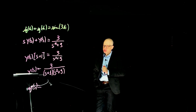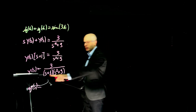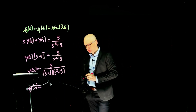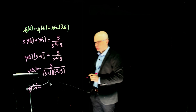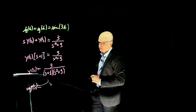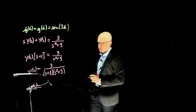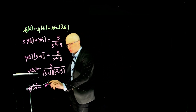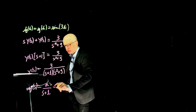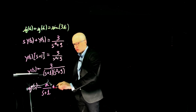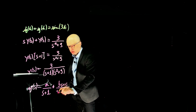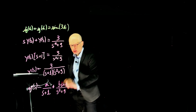We have two terms. The first denominator is s+1, so what goes on top? The first term is going to be A over s+1. And the second term is Bs+C over s²+9. Excellent - very good.